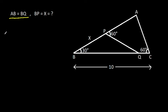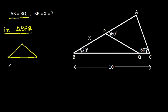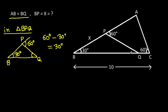In triangle BPQ, this angle is 30 degrees and this angle is 60 degrees, so this angle will be 60 degrees minus 30 degrees, that will be 30 degrees. This angle is 30 degrees.